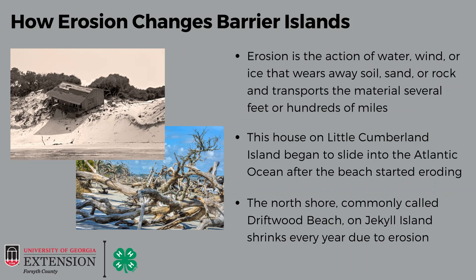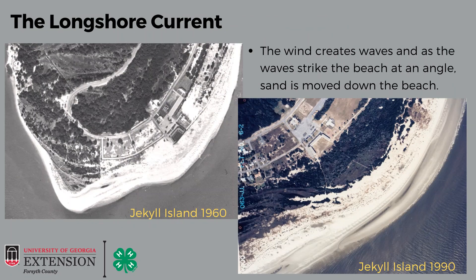The north shore on Jekyll Island is commonly referred to as Driftwood Beach, and that side of Jekyll shrinks a little bit every single year due to the erosion happening there. The longshore current is also an example of how erosion helps shape the beach.